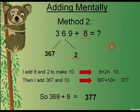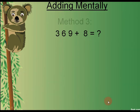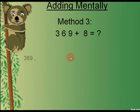Now let's talk about the third method, and the easiest one: you will count on from 369 in 8 steps to reach the answer. We will start by adding one by one.